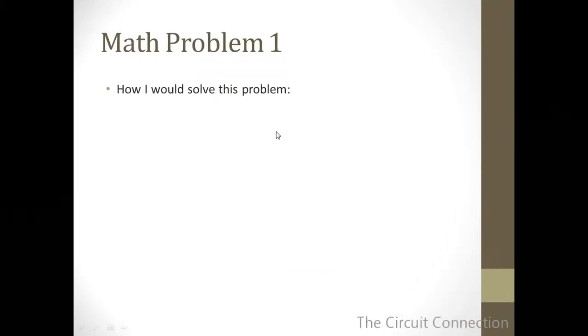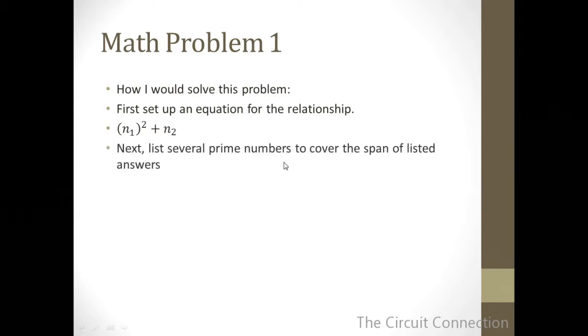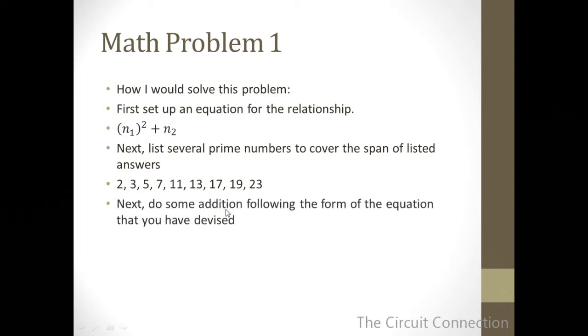I would first go about solving this problem by setting up an equation for the relationship. That equation, based upon the description in the problem, is that you're going to square a prime number, and then the next consecutive prime number n₂, you're going to add to that: (n₁)² + n₂. I would go ahead and start listing several prime numbers to cover the span of listed answers: 2, 3, 5, 7, 11, 13, 17, 19, and 23. Now, we're going to do some squaring and then some addition, following the form of the equation that we just devised.